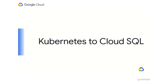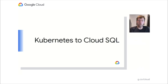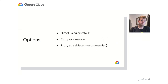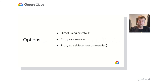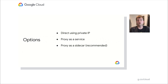Next, let's talk about Kubernetes to Cloud SQL. There are three different ways you'll see recommended to connect. The first is you can connect directly using private IP. The second is you can run the proxy as a service. And finally, you can run the proxy as a sidecar — this is our recommended solution over the first two.